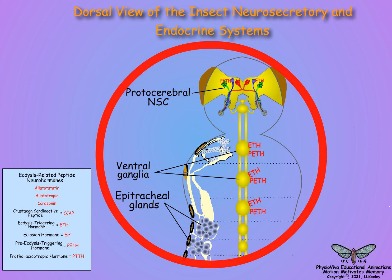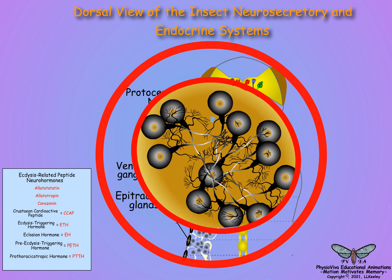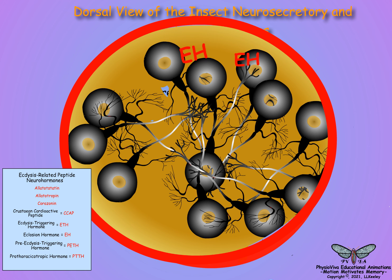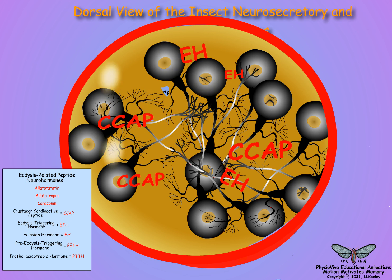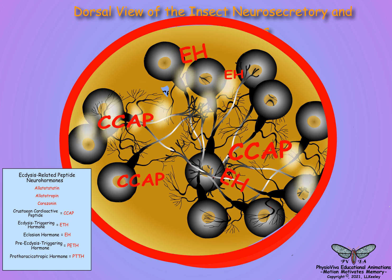Ecdysis-triggering hormone and pre-ecdysis-triggering hormone also stimulate brain neurosecretory cells to release eclosion hormone from central and peripheral neurohemal sites. Eclosion hormone stimulates the release of crustacean cardioactive peptide by ventral ganglia, which turns off pre-eclosion behavior and turns on eclosion behavior.